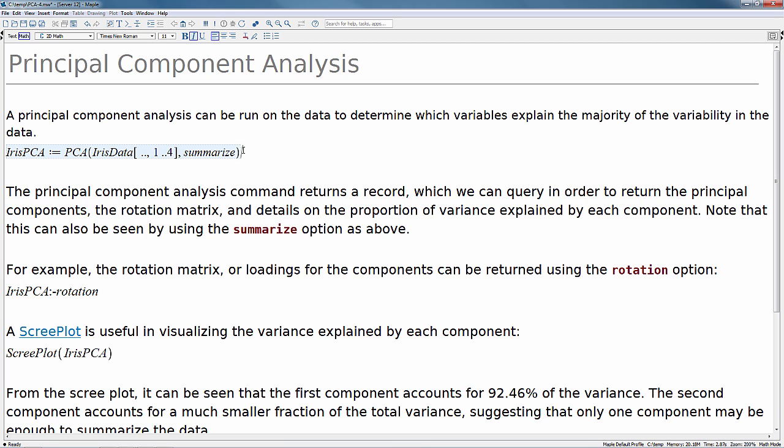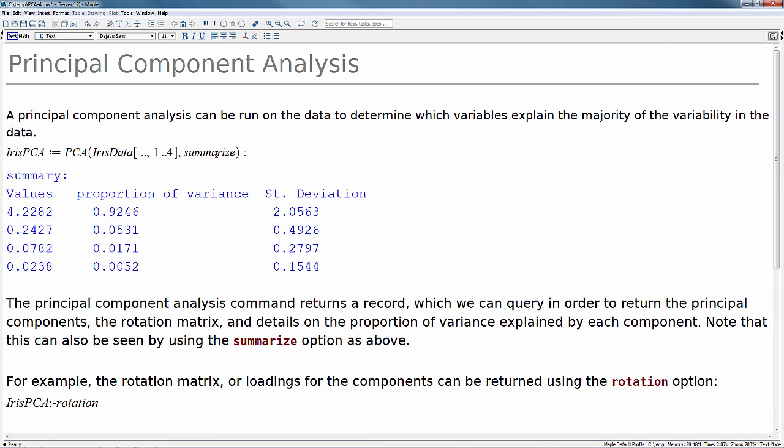To do so, let's make a new variable called irisPCA, and we're going to run the PCA command from the statistics package on our iris data. We'll just run this on the numeric columns, as we saw before. We'll add the summarize option in order to get a better picture of what's going on within our PCA. From this, we can very quickly summarize and see that each one of the PCA components, the first one accounts for 92% of our variance. This is a fairly high value, so we can start to think already that the first component may be enough to describe the overall variability of our dataset.